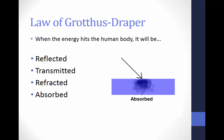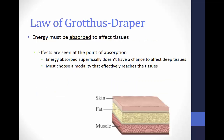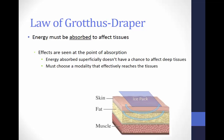Energy can also be absorbed. Absorption is the process of a medium collecting thermal energy and changing it to kinetic energy; partially transmitted waves are absorbed by the tissues and turned into heat. The Grotthuss-Draper law states that electromagnetic waves or energy must be absorbed to benefit target tissue — the effects of the modality are seen at the point of absorption. Energy absorbed superficially does not have a chance to affect deeper tissues. Therefore, we must choose a modality that effectively reaches the target tissue. For example, applying a cold pack mostly affects superficial skin tissue, whereas applying ultrasound allows us to treat much deeper tissues such as muscle.